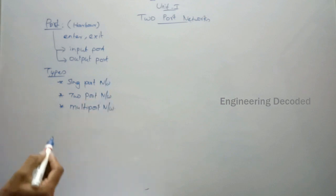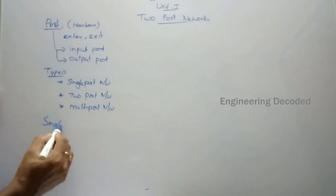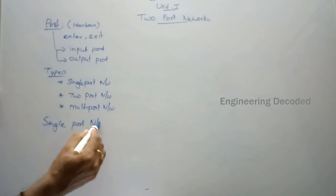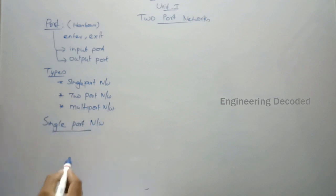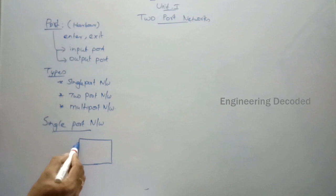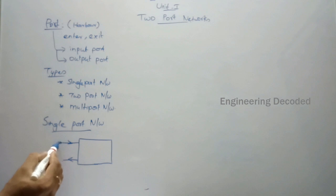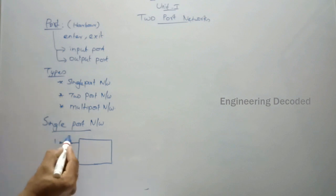First we can see what is a single port network. Let me draw a network. Here I am going to give an input to this and I am going to collect an output. I am naming this port as 1 and this port as 1-dash. I am going to supply a current I to this port.